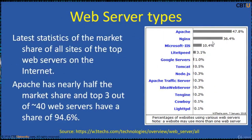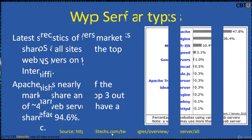These are the latest statistics of the market share of the top web servers on the internet. Apache has nearly half the market share. The top three — Apache, Nginx, and Microsoft IIS — out of 40-odd web servers have a combined market share of 94.6%, with the remaining contributing about 5%.